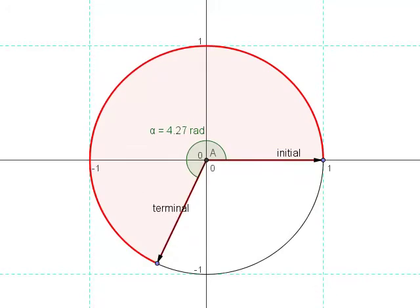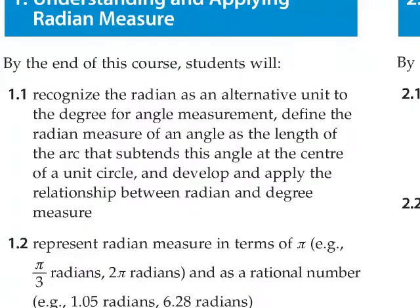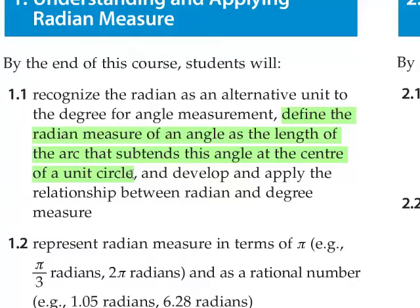Well, why don't we have a look at your curriculum. Your curriculum says that you should recognize the radian as an alternative unit to the degree for angle measurement. So far, so good. Define the radian measure of an angle as the length of the arc that subtends this angle at the center of the unit circle.